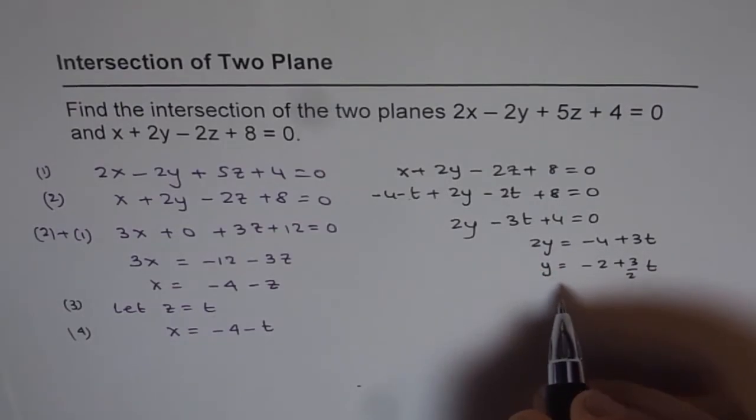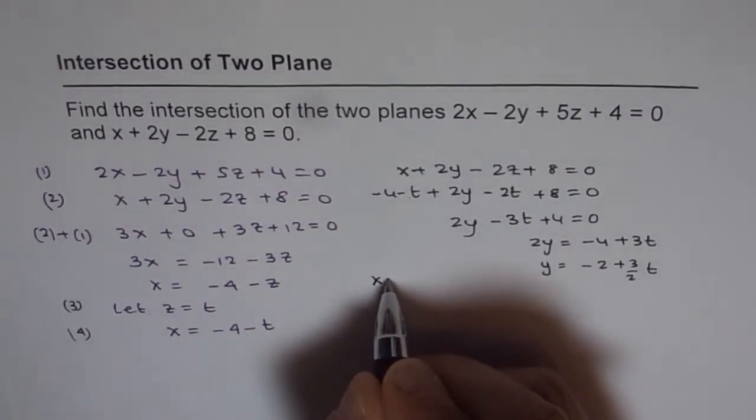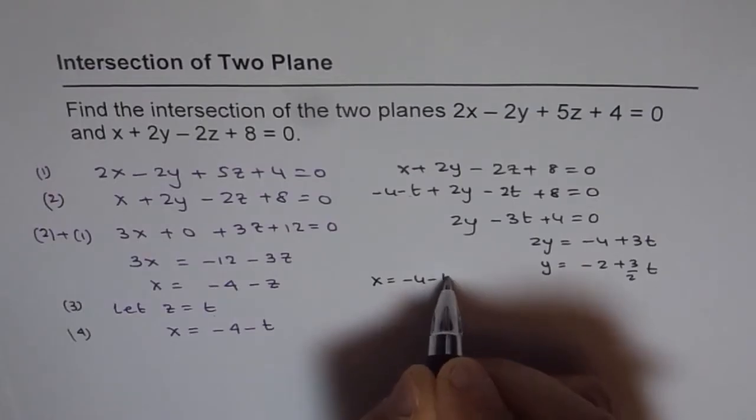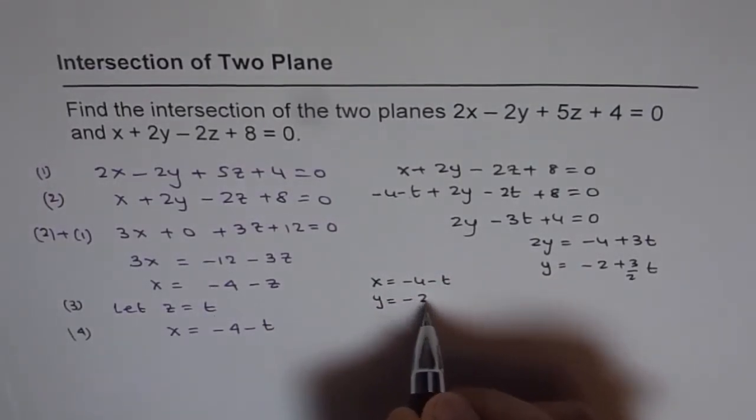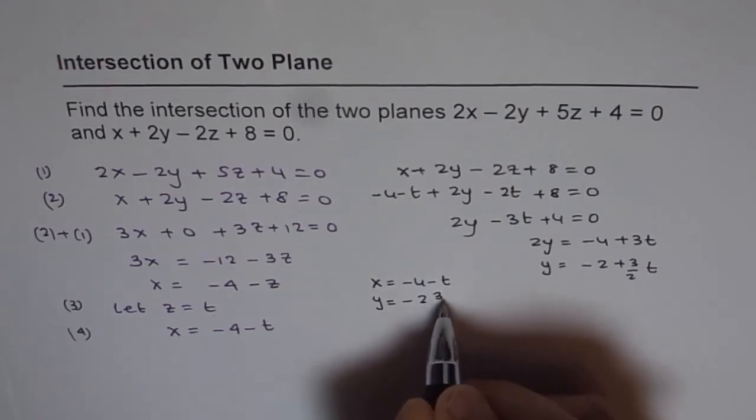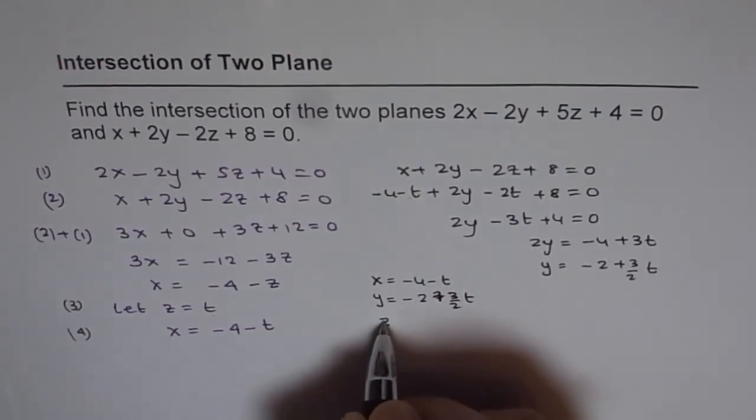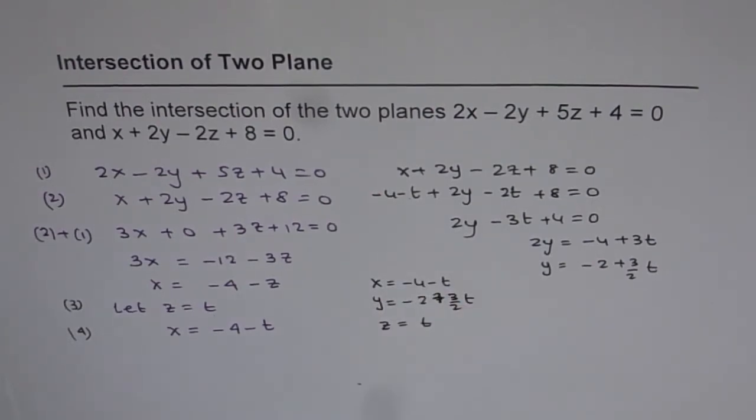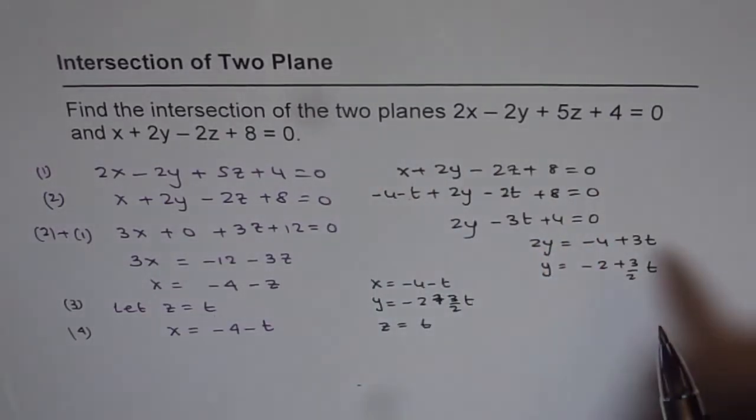This gives us the equation of a line: x = -4 - t, y = -2 + 3t/2, and z = t. This is the equation of the line that represents the solution for this system.